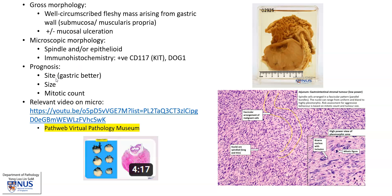Prognosis really depends on the site, size, and mitotic counts. Generally, GISTs that occur in the stomach have a better prognosis than in other locations in the GI tract. There is also a relevant video on microscopy. You can find this in the PathWeb Teacher YouTube channel, as well as in our PathWeb online resource, Virtual Pathology Museum, on the page of the gastric GIST specimen.